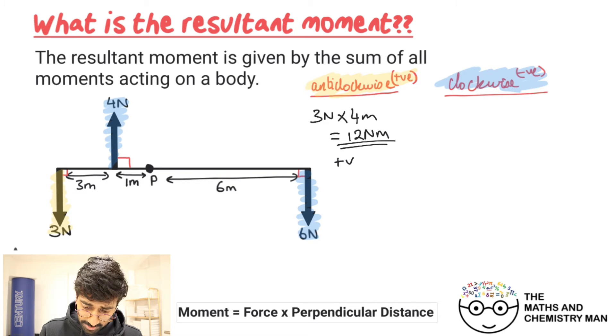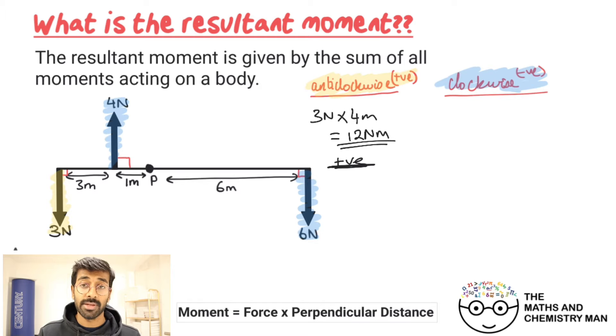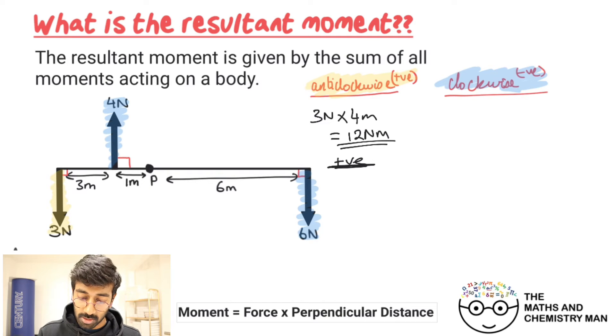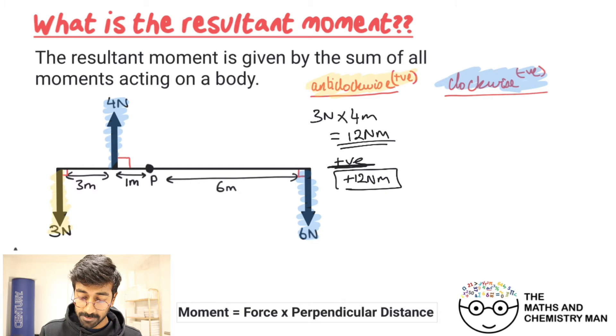So we need to do three Newtons multiplied by the perpendicular distance of four meters, giving us 12 Newton meters in the anti-clockwise direction. We give that a positive sign because it's in the anti-clockwise direction, so positive 12 Newton meters.